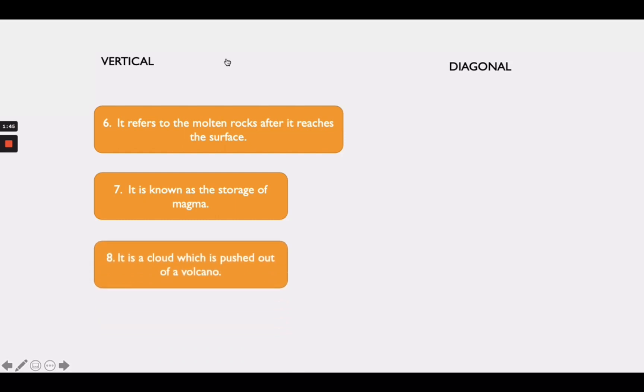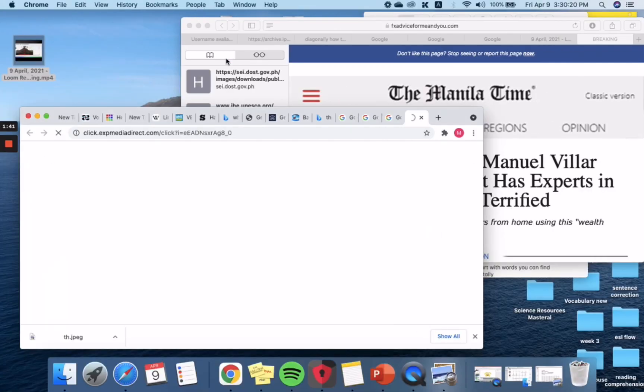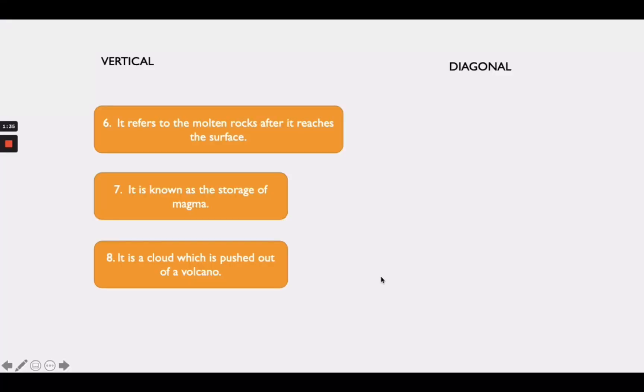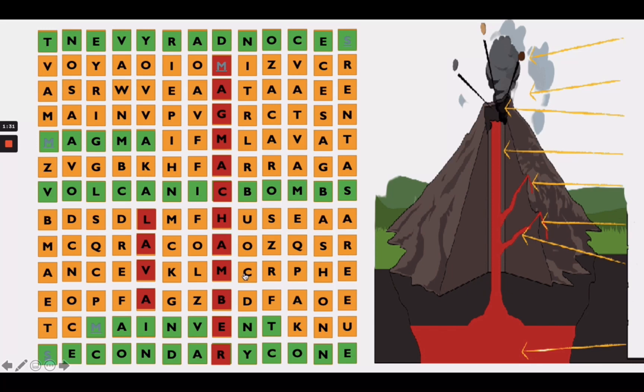Next is, it is a cloud which is pushed out of a volcano. What do you think is the answer? That's right! It's ash, gas, and steam. Very good!